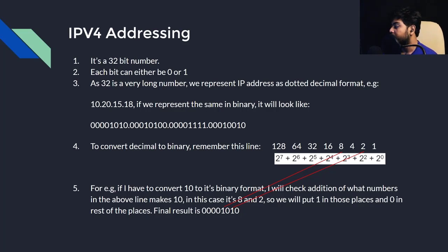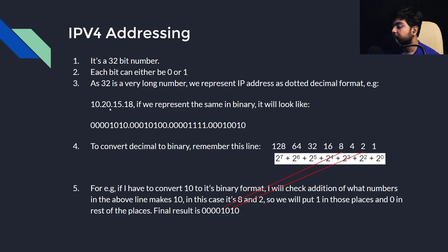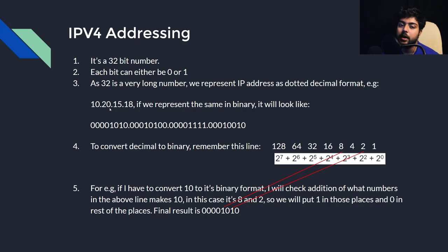For example, I'm using 10.20.15.18 as a sample IP address. How should I convert this IP address from dotted decimal format to binary form? We'll also see how to do the reverse — how to convert from binary to decimal.